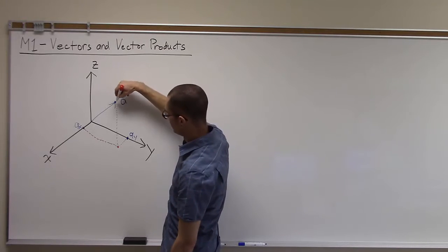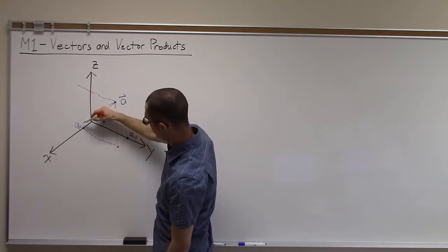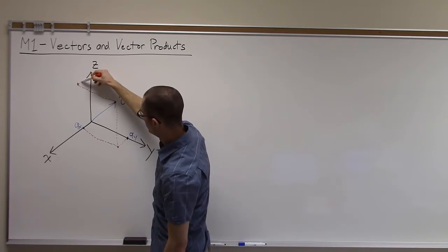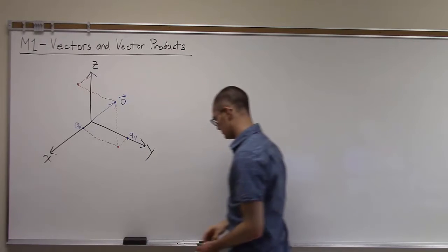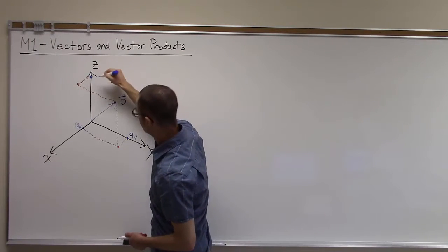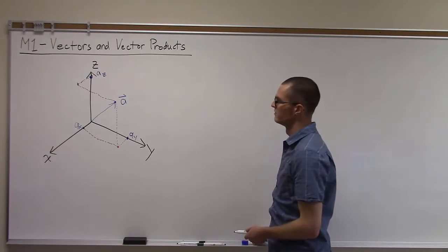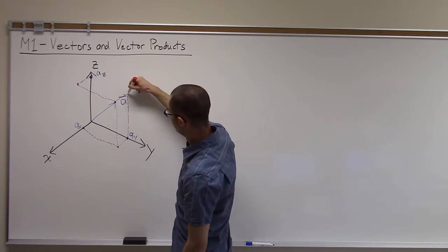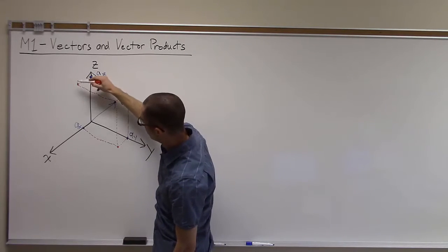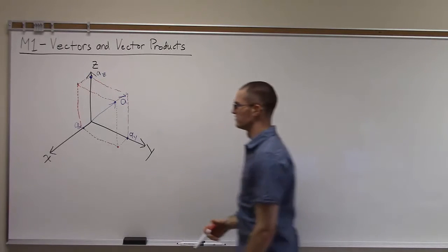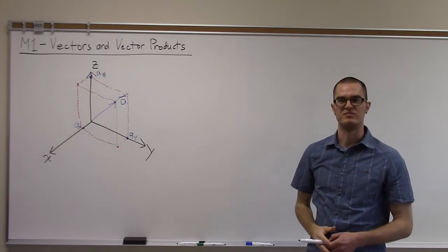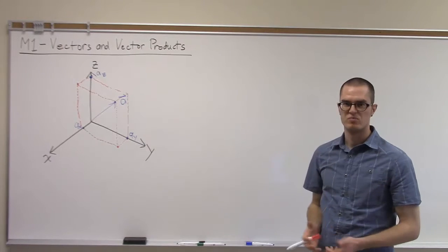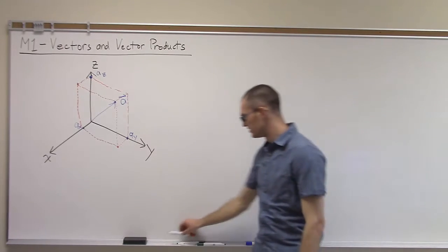In the same way, if I project that point over to the x-axis parallel to the z-axis, and then project it across to the z-axis, I get the z component of A. So a vector in three dimensions consists of three components, each of which is a scalar.